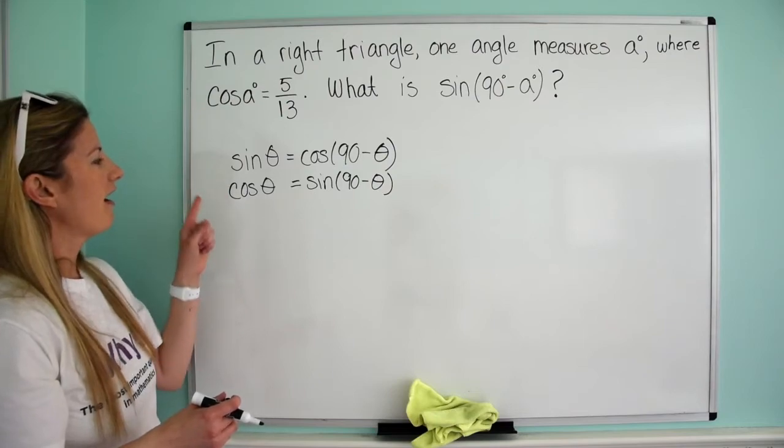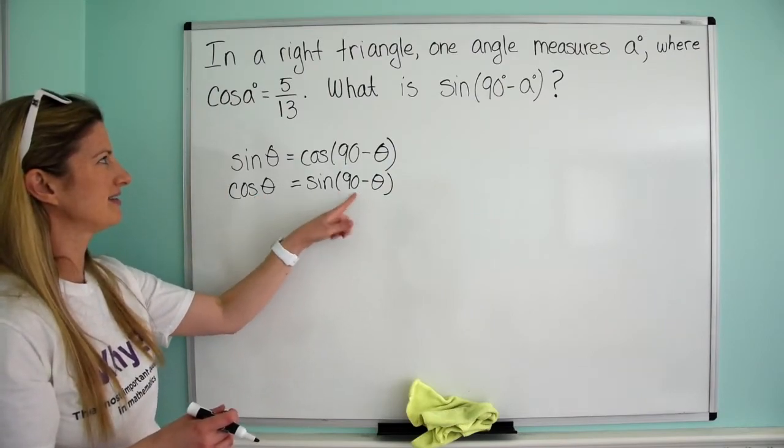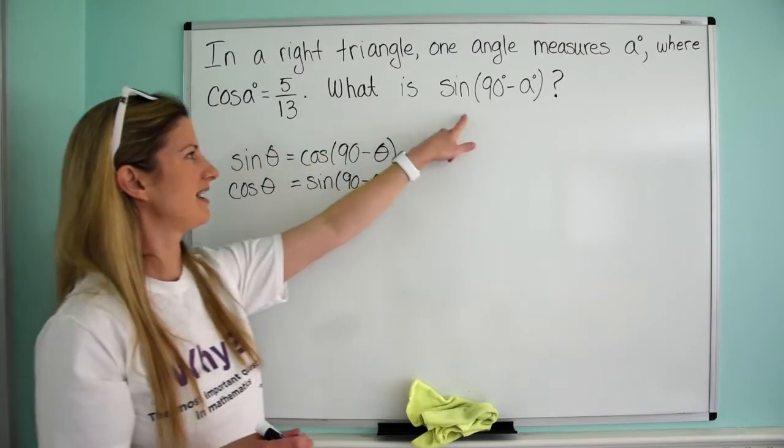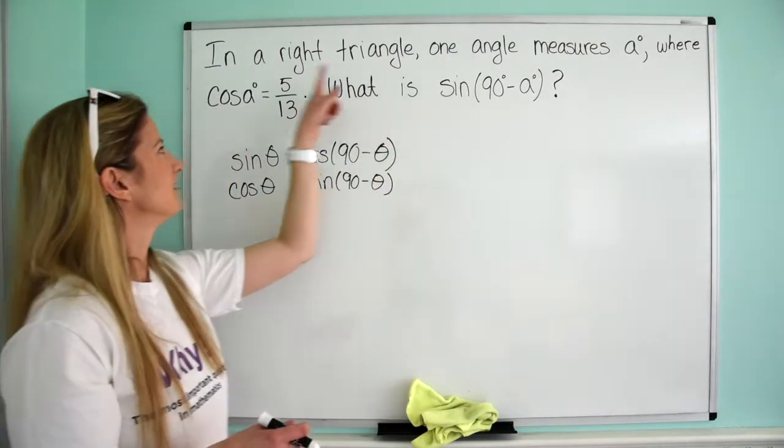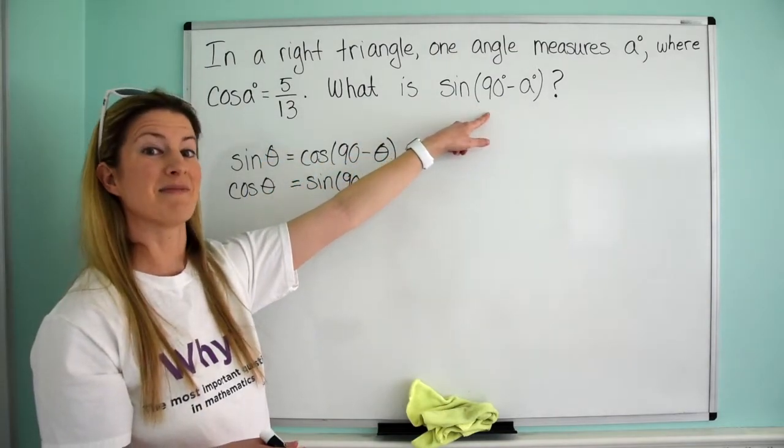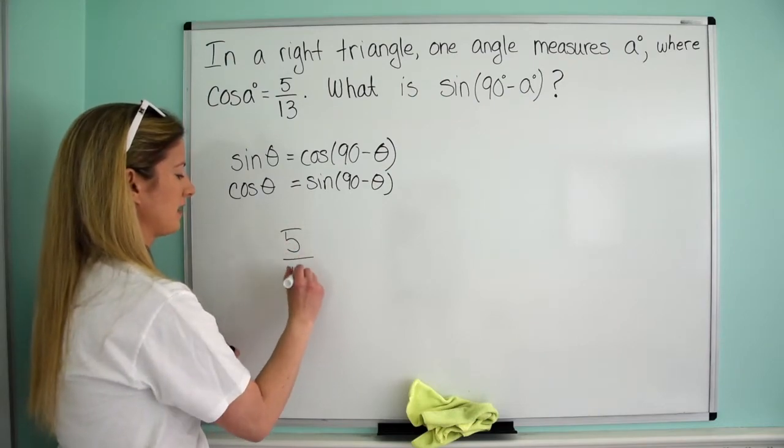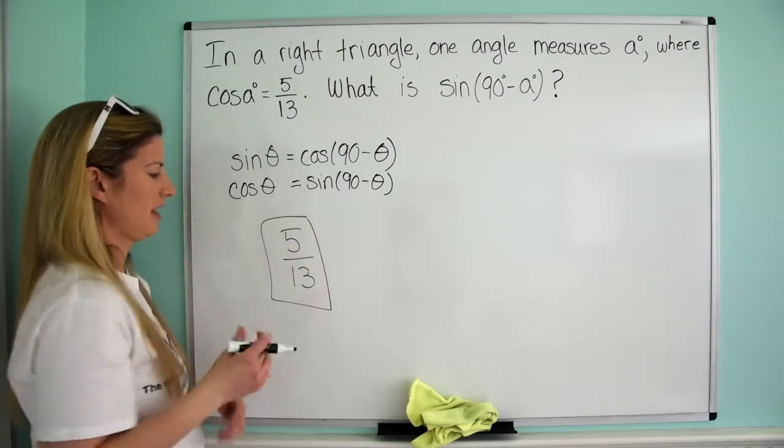This is what you're going to use, and it's literally a two-second problem. So if we think about it, the cosine of theta equals the sine of 90 minus theta. Cosine A, sine 90 minus A. So if the cosine of A is 5 over 13, the sine of 90 minus A is the same thing. It's just going to be 5 over 13.